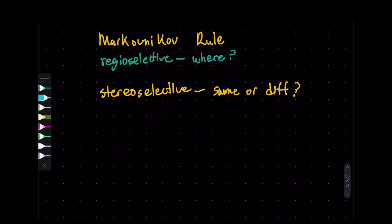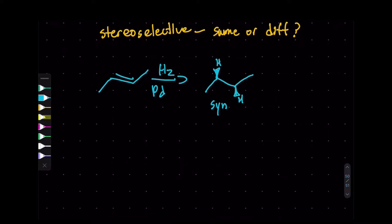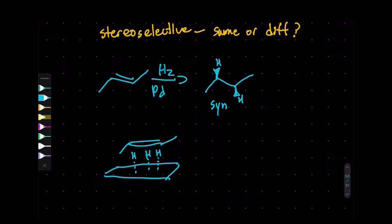When we learned about alkenes and applying hydrogen with a palladium catalyst, we know it goes all the way. One thing I didn't specifically mention is that this is a syn addition — hydrogens attaching on the same side. What happens is we have the alkene, and there is a plate of nickel, palladium, or platinum — mostly nickel because it's cheap — and the hydrogens are attached on it. We run the alkene or alkyne and the hydrogen attaches on the same side. Hence why we call it a syn addition.